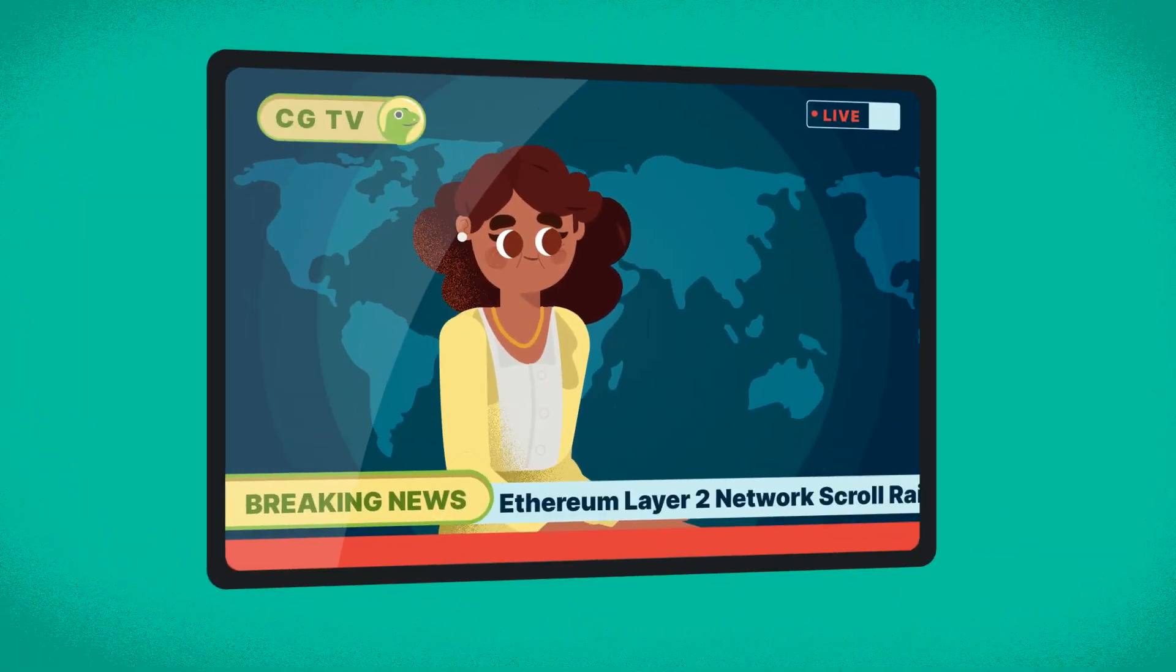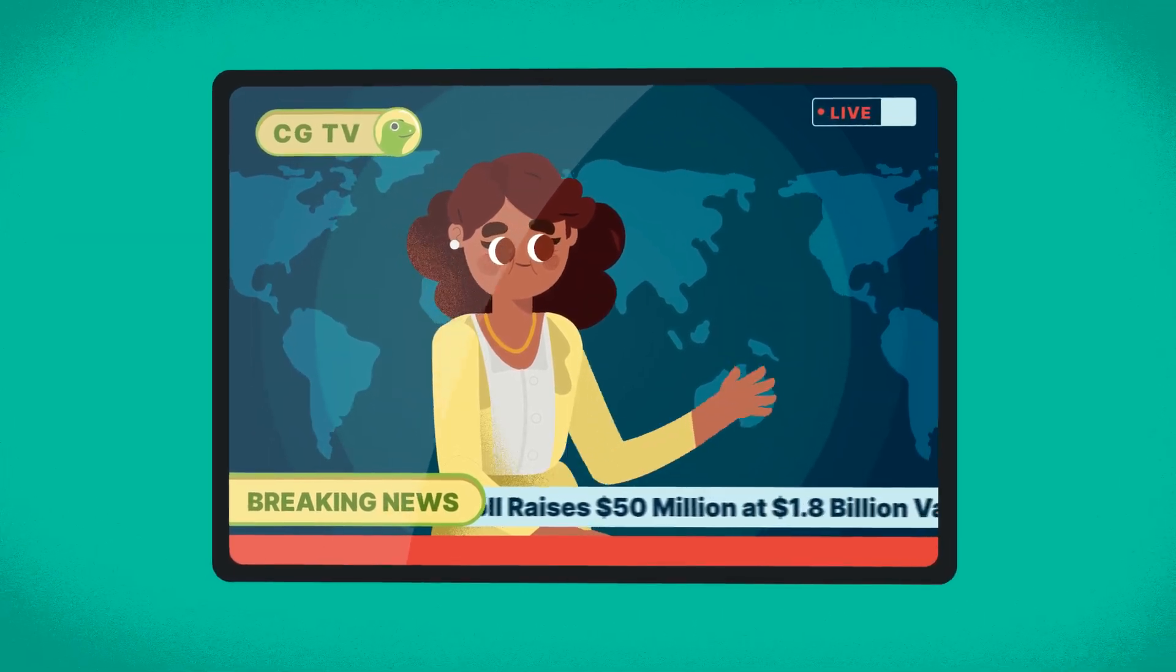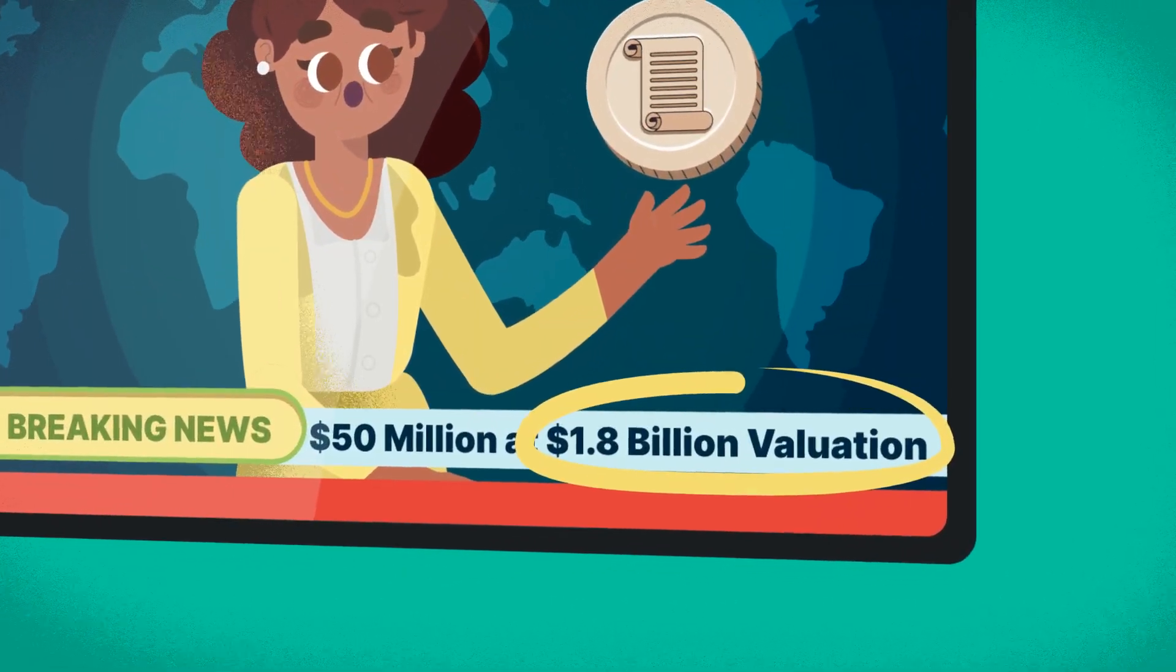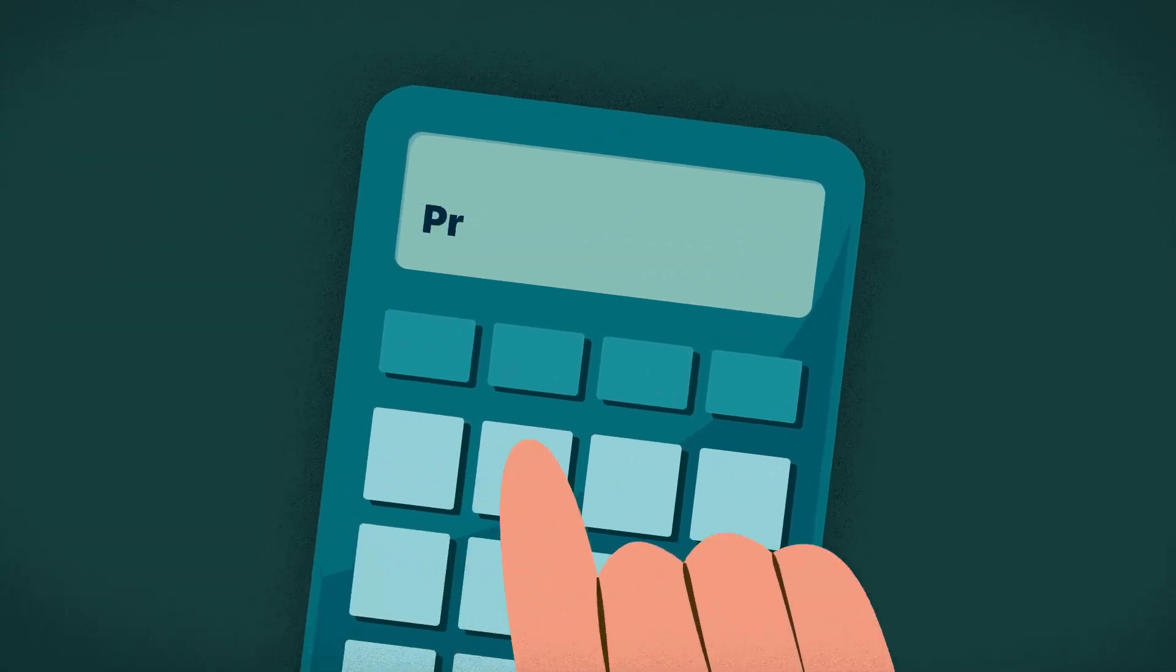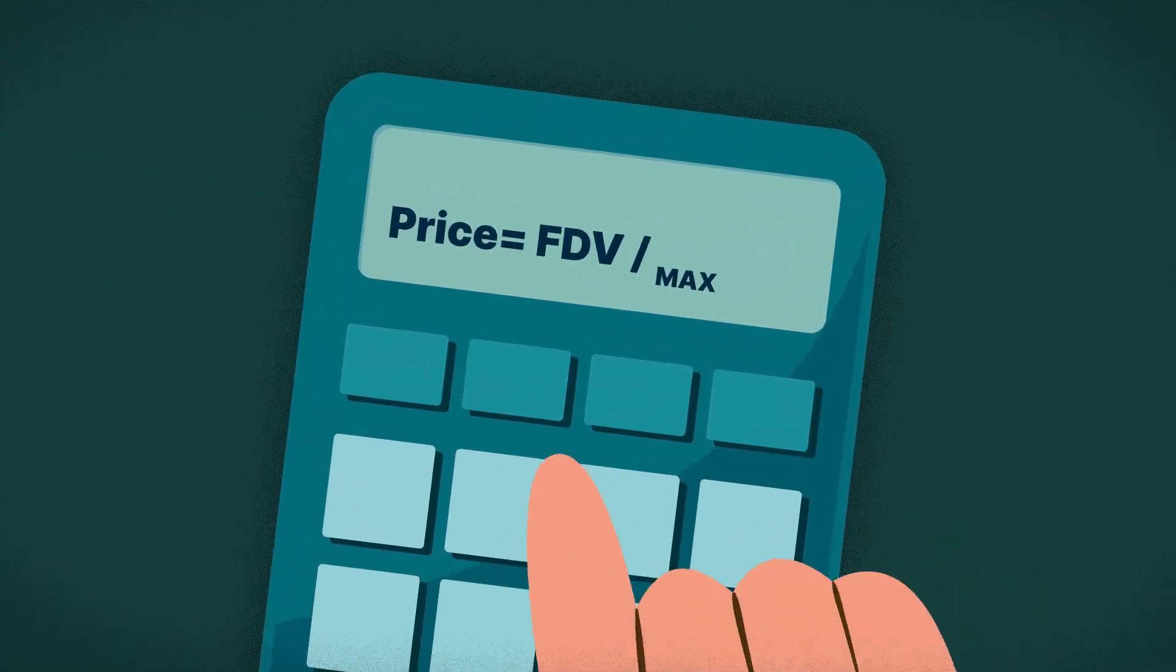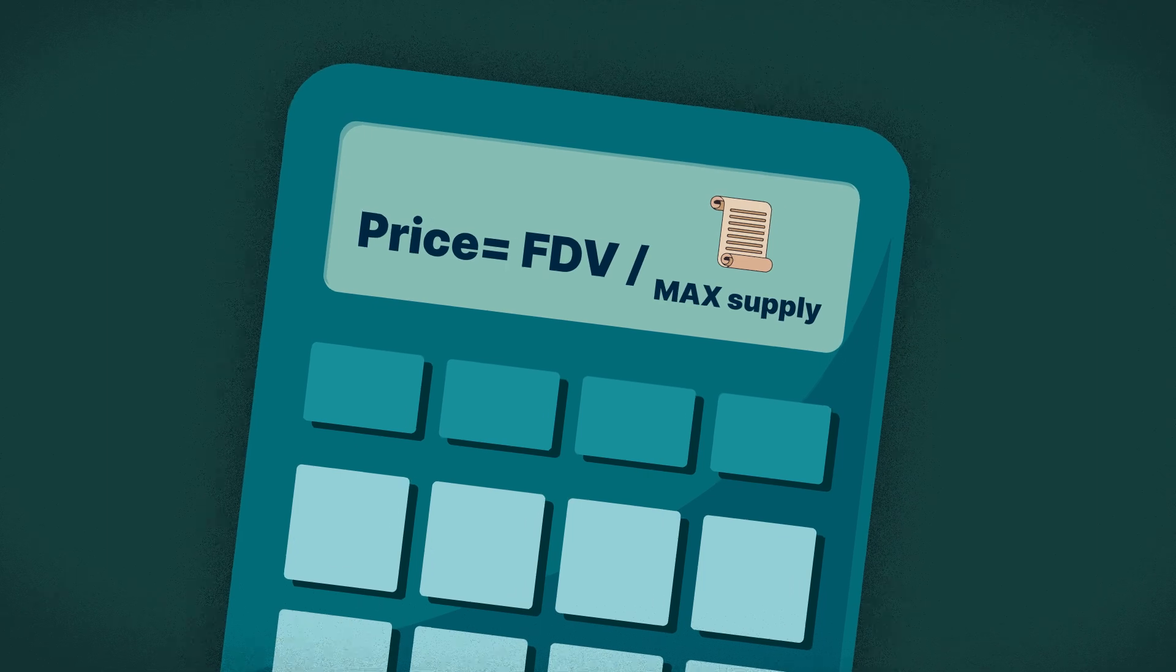When you see headlines like this on the news, the valuation portion always refers to the project's FDV. If you knew the total supply of coins of Scroll, then you'd be able to easily work out the price that these investors bought at too.